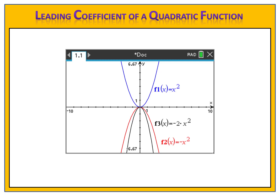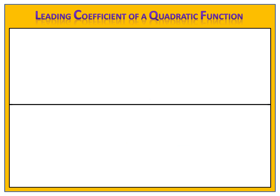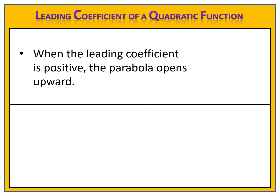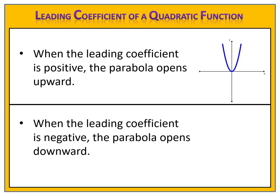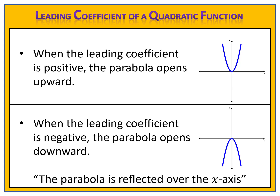So when our leading coefficient is positive, the parabola opens upward, and when the leading coefficient is negative, the parabola opens downward. Let's make a summary chart of this. When the leading coefficient is positive, the parabola opens upward. When the leading coefficient is negative, the parabola opens downward. When the parabola has flipped upside down, we say that the parabola is reflected over the x-axis. This is an excellent reference for you to include in your notes. Please pause the video here, make these notes in your notebook, and return when you've finished.